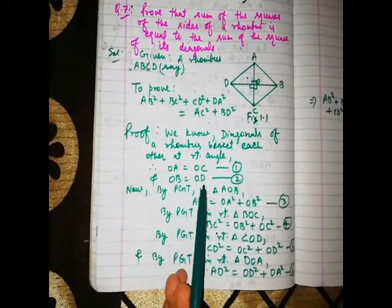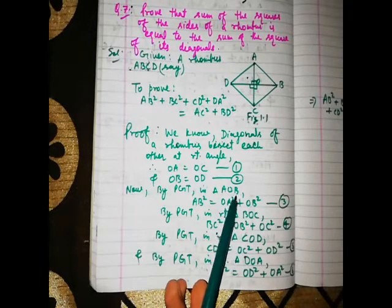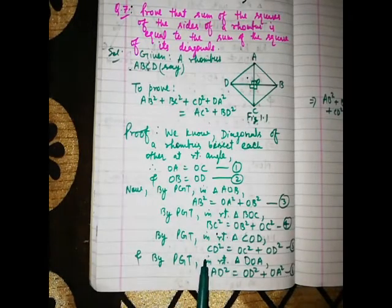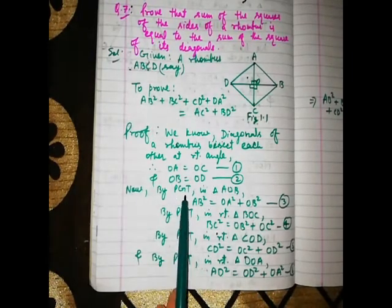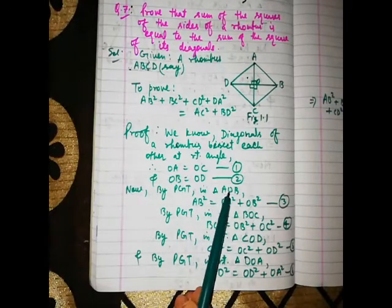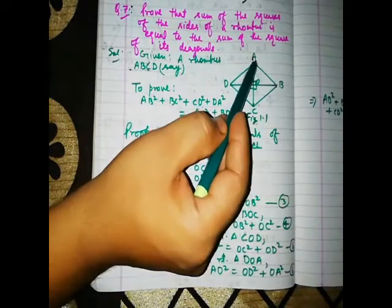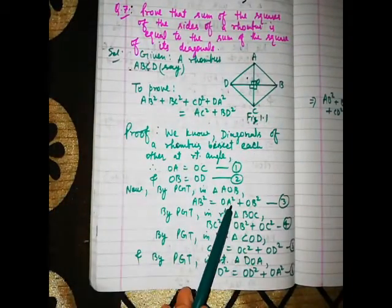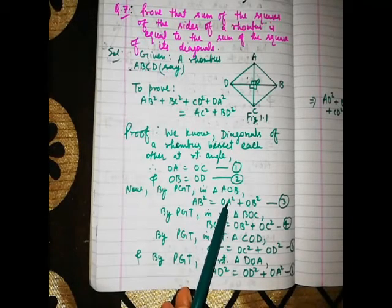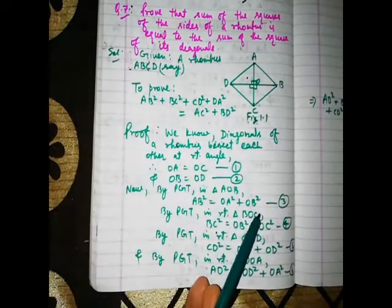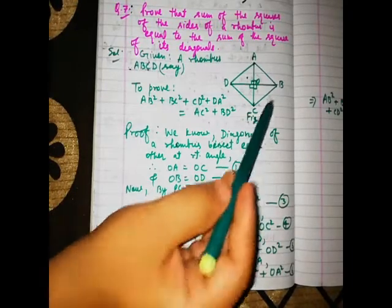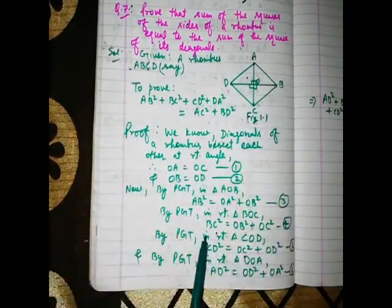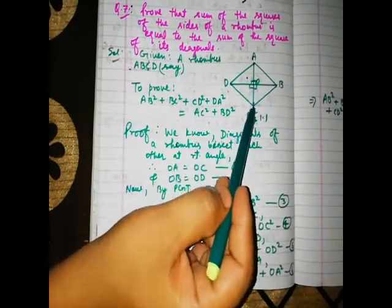We will apply the Pythagorean theorem 4 times. In triangle AOB: AB² equals OA² plus OB². In triangle BOC: BC² equals OB² plus OC².